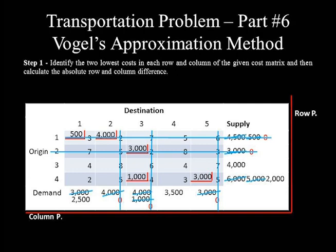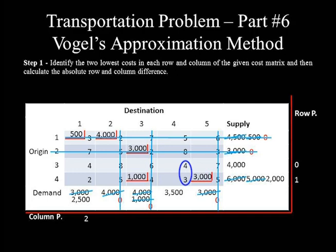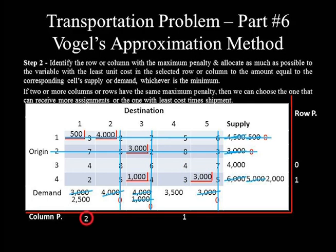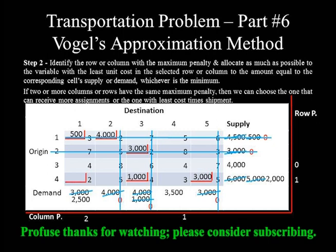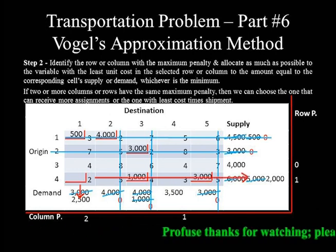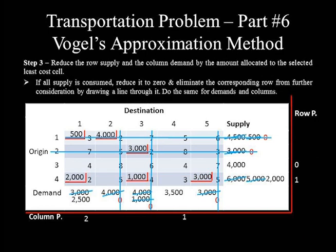Now row and column penalties are simply the difference between unit costs of the two active columns and two active rows respectively. Row 3 penalty is 4 minus 4 equals 0; row 4 penalty is 3 minus 2 equals 1. Column 1 penalty is 4 minus 2 equals 2; column 4 penalty is 4 minus 3 equals 1. With a maximum penalty of 2, column 1 is chosen. The smaller unit cost in column 1 is 2, with supply of 2,000 and demand of 2,500, so 2,000 is allocated.